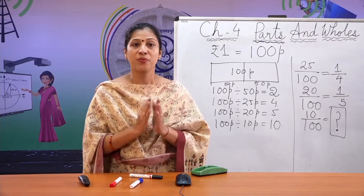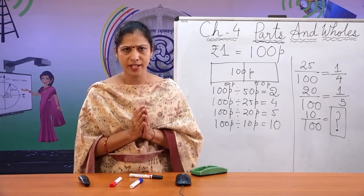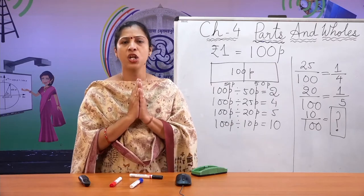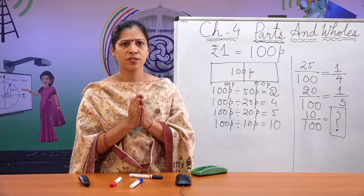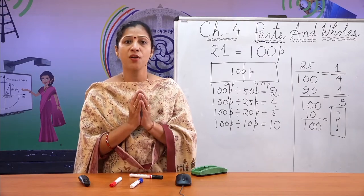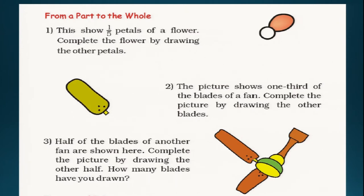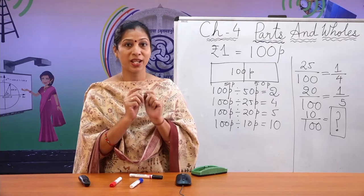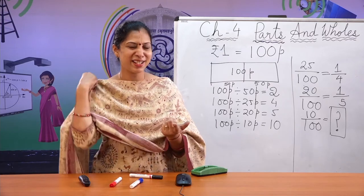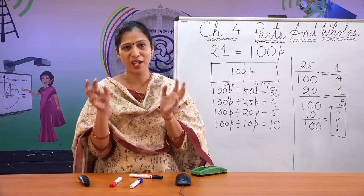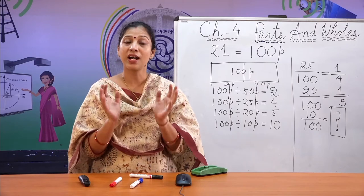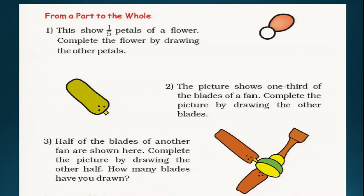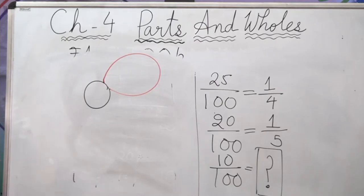In this activity, we go from a part to the whole — a part of a thing is given and you have to find out what the whole looks like. The first question shows an incomplete picture of a flower. This shows 1/5 (one-fifth) petals of a flower, meaning 1 part out of 5 parts is given. Can you complete the flower by drawing the other 4 parts?